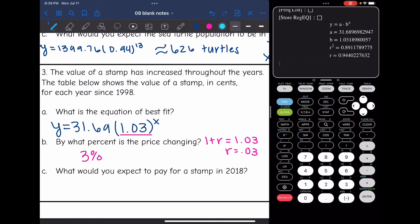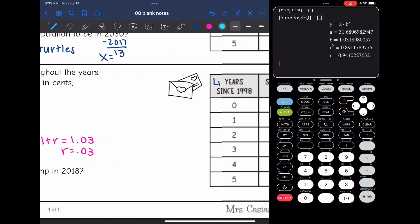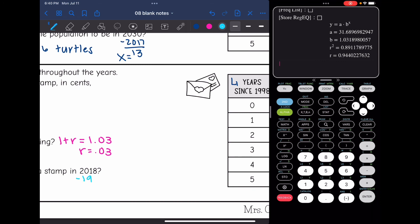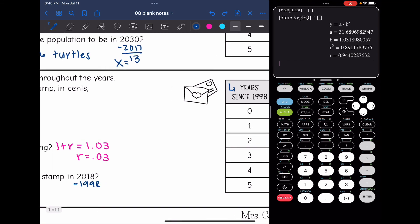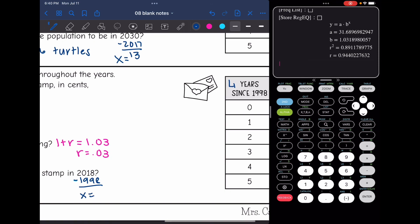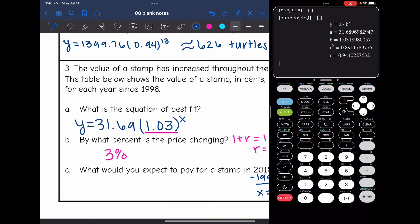And then the last question says, what would you expect to pay for a stamp in 2018? The table started in 1998 and 2018 is 20 years after 1998. So I'm going to plug in X equals 20 into that equation to figure out the price of an expected stamp in 2018. So 31.69 times 1.03 to the 20th is what I'll put in the calculator. 31.69 times 1.03 to the 20th. We would expect it to be about 57.23 cents.